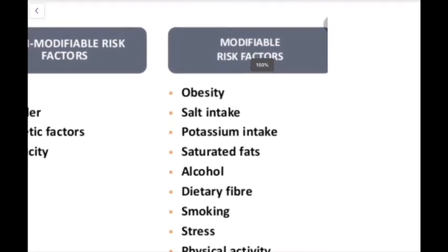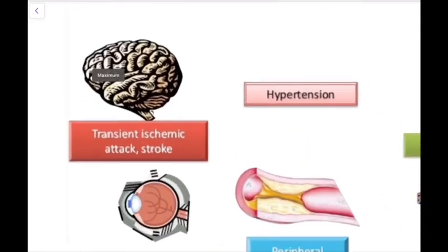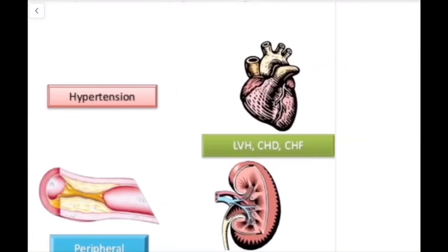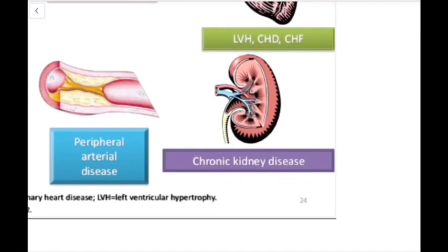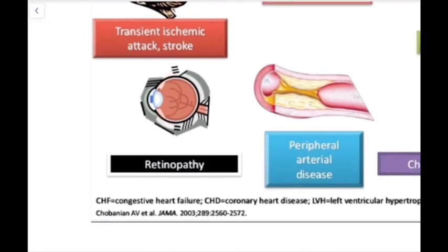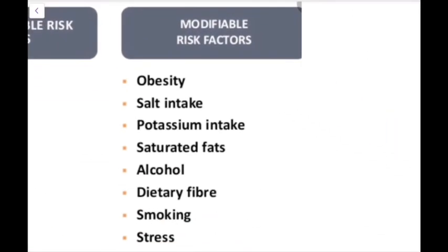Prevention of hypertension is important because it can damage multiple organs and systems in the body. In the brain it can cause strokes and cerebrovascular accidents. In the heart it can lead to myocardial infarctions, heart failure, and more. It can cause chronic kidney disease, and in the arteries it increases the risk of atherosclerosis — fat deposition in vessel walls — leading to peripheral arterial disease. It can also affect the eyes, causing retinopathy and visual problems.